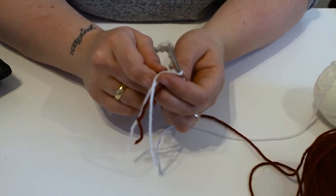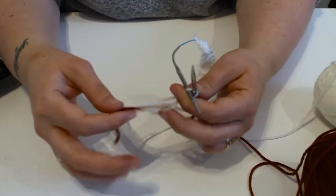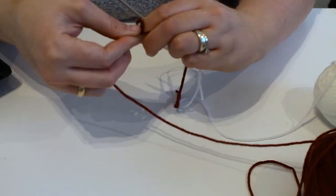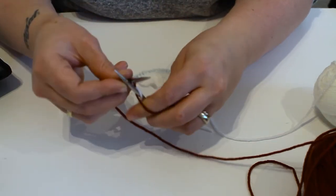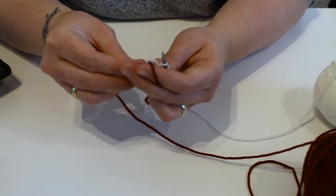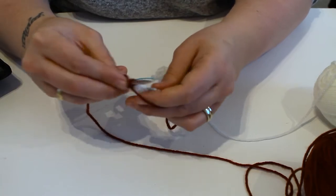From this point, it's stocking stitch for six rows. Always fiddly starting this. Just knit one row, purl the next row, do this for six rows.